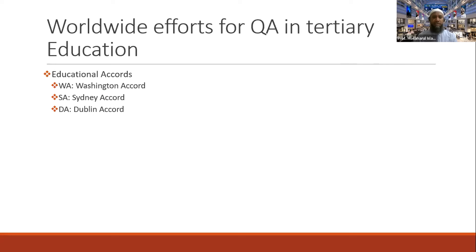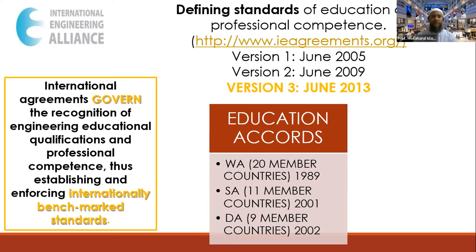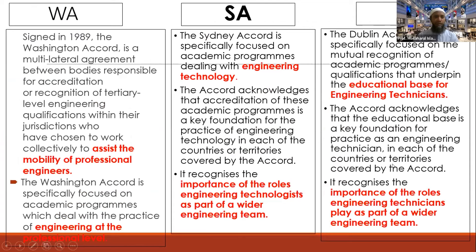Worldwide there are significant efforts for quality assurance in university-level education. We have different accords: the Washington Accord, the Sydney Accord, and the Dublin Accord — three accords addressing three different perspectives for engineering graduates, technologists, and technicians. The Washington Accord is for professional graduate engineers, the Sydney Accord for engineering technologists, and the Dublin Accord provides the educational base for engineering technicians.